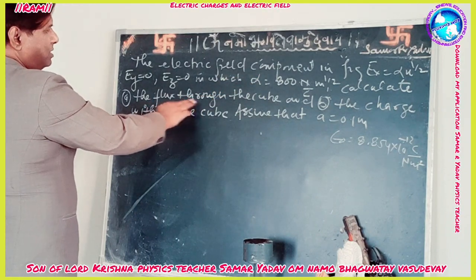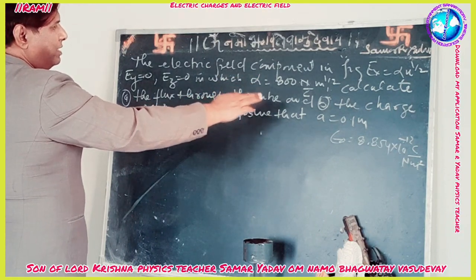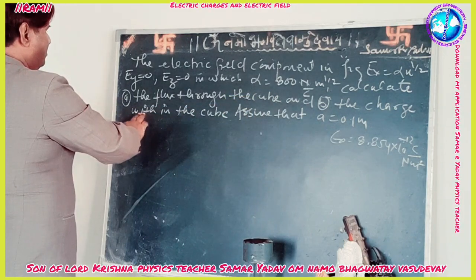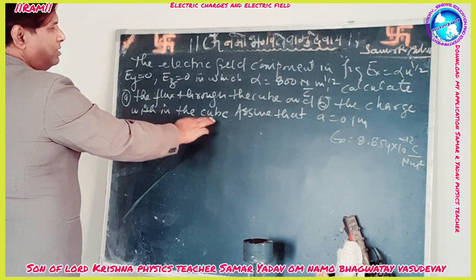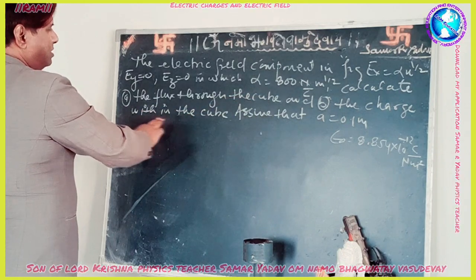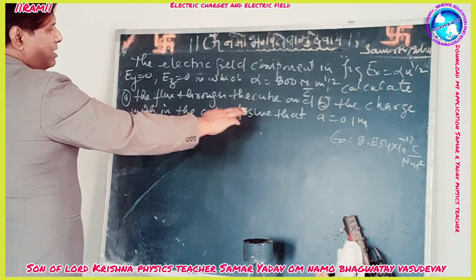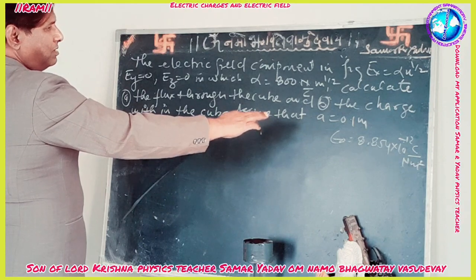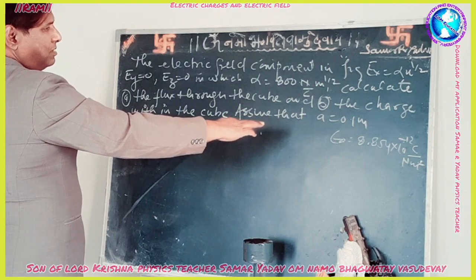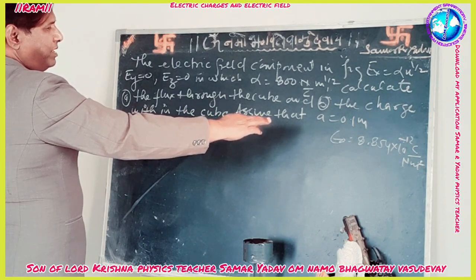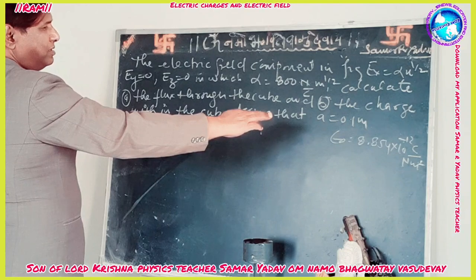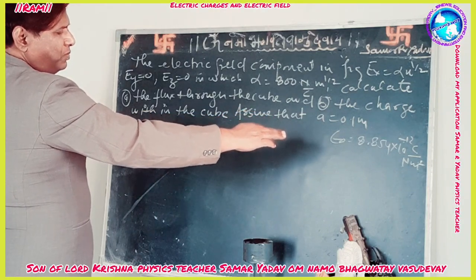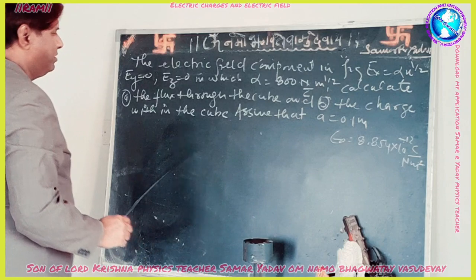Calculate the flux through the cube, and second, the charge within the cube. Assume that a is equal to 0.1 meter, and epsilon-zero is equal to 8.85 times 10 to the power minus 12 Coulomb squared per Newton per meter squared.